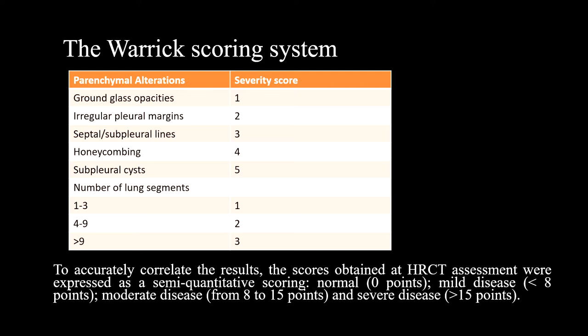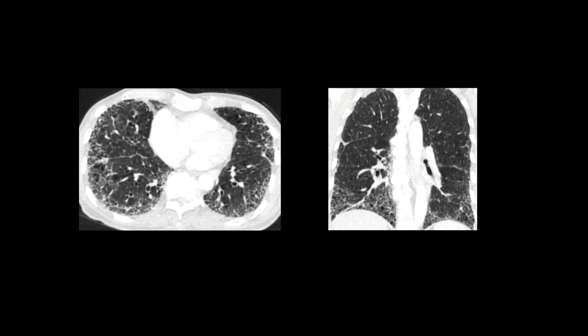The number of lung segments involved by these abnormalities were also considered and scored accordingly. To accurately correlate the results, the scores obtained at HRCT assessment were expressed as a semi-quantitative scoring. Mild disease was considered when the score was less than 8, while severe disease was considered when more than 15 points were present. These are the representative axial and coronal reformatted images in lung window of patients with UIP pattern of interstitial lung disease.